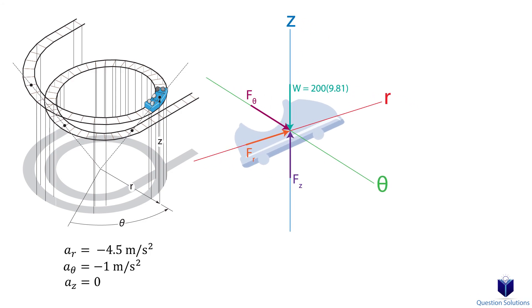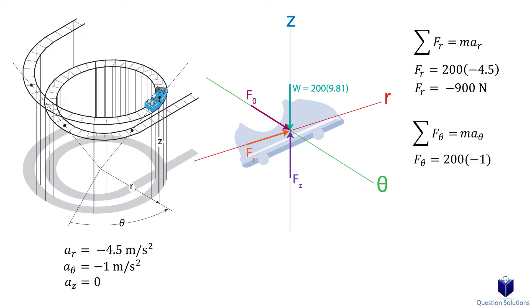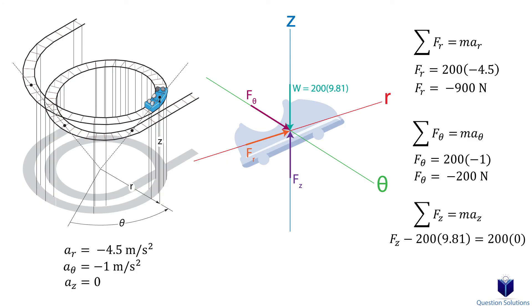Let's write our equations of motion. For the radial direction, the only force is the radial force, equal to mass times radial acceleration — let's solve for it. For the transverse direction, the only force is the transverse force, equal to mass times transverse acceleration. Lastly, for the z axis: the z force plus the weight downwards equals mass times z acceleration. But remember the z acceleration is zero, so let's solve for the z force. Those are our answers.